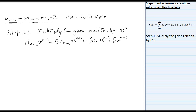For example, if you have subscript n+2, you multiply with x^(n+2). If the highest subscript is aₙ, you multiply with x^n. If you have aₙ₋₁, you multiply with x^(n−1). Here the highest subscript is n+2, so we multiply the given relation by x^(n+2).